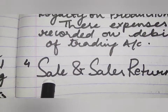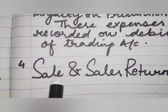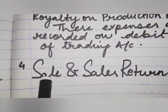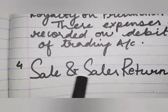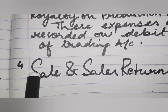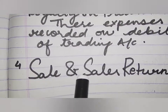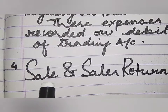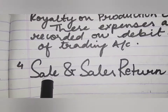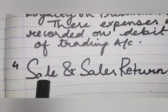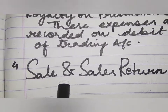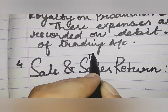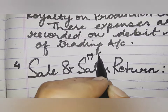The fourth item is sales and sales return. Sales include both cash and credit sales. Sales returns or returns outward are deducted from total sales, and net sales are credited on the trading account.